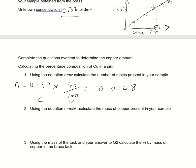Now, using the equation moles equals mass over Ar, since we're just going to be looking at the copper, calculate the mass present in your sample. So we need to rearrange this equation, so instead of moles equals mass over Ar, we're going to have mass equals moles times Ar. We've got the moles up here, and copper is 63.5.